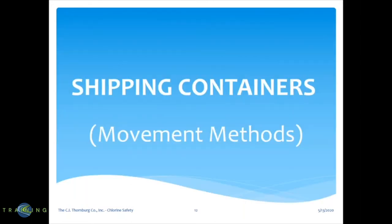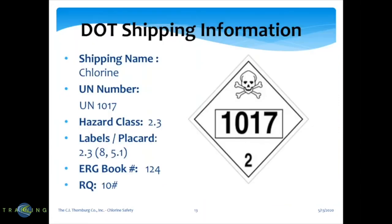Shipping containers and movement methods. DOT shipping information: when you see us pull up onto your property with chlorine cylinders, you'll see the placard 1017, class 2. The shipping name is chlorine. UN number is 1017. Hazard class is 2.3, which will be noted on labels and the placard. In the emergency response guidebook, which all drivers have, chlorine is on page 124.